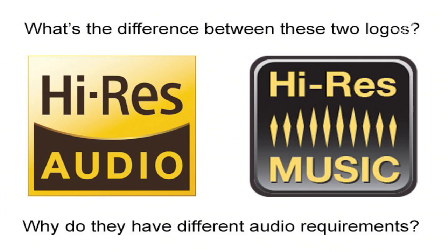That's why I posed the question — I don't think you could find a handful of people that would know what the difference is between these. I didn't know until I investigated and actually got in touch with the Japan Audio Society some months ago. Because Sony originally, some years ago — probably three or four years ago — came up with the logo that's on the screen on the left-hand side: the gold and brown high-res audio logo. They established a set of requirements. It simply said these are the requirements in order to gain license privilege for this logo, and it includes 40 kilohertz.